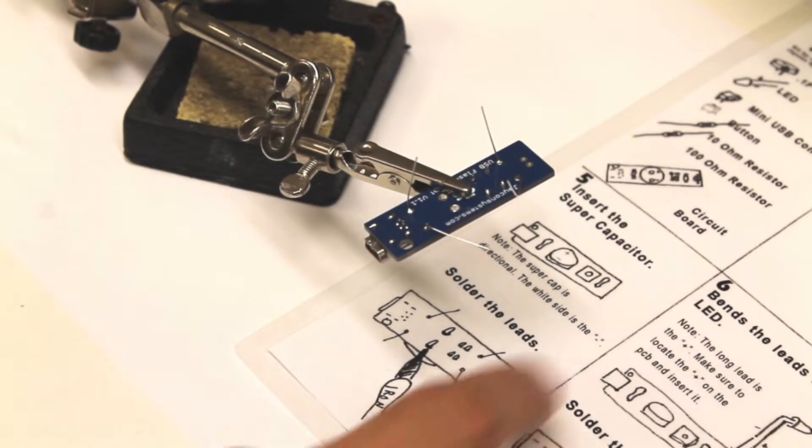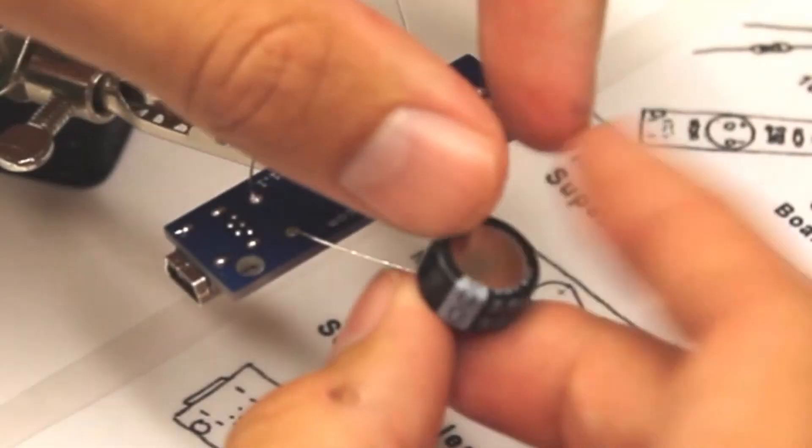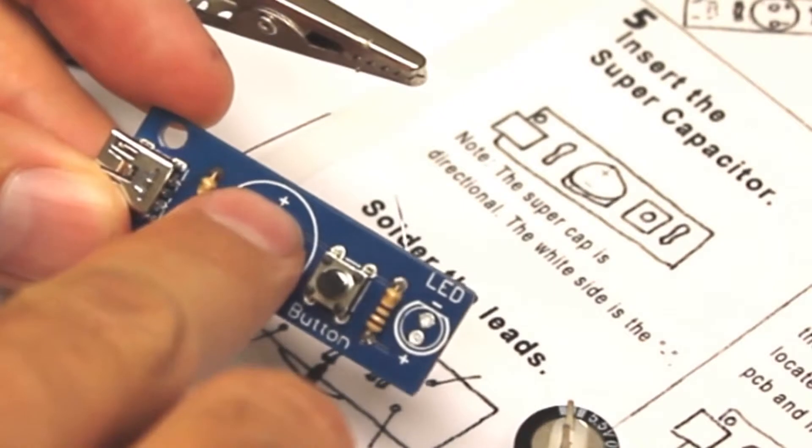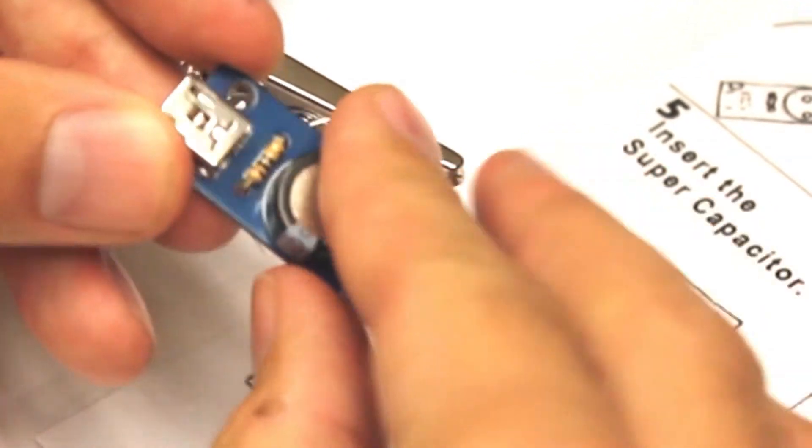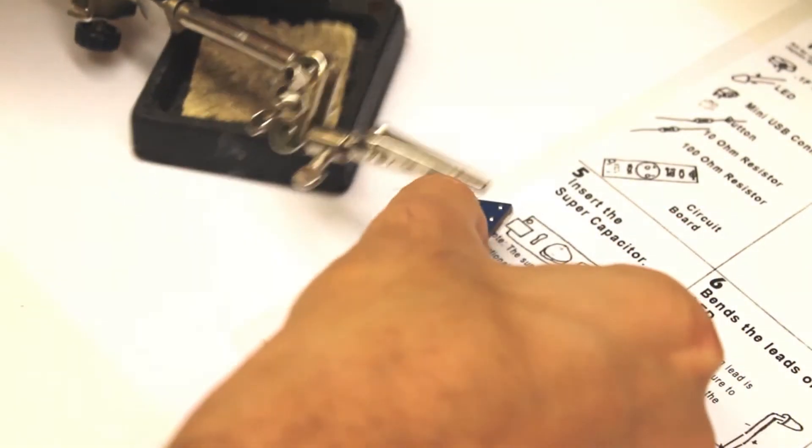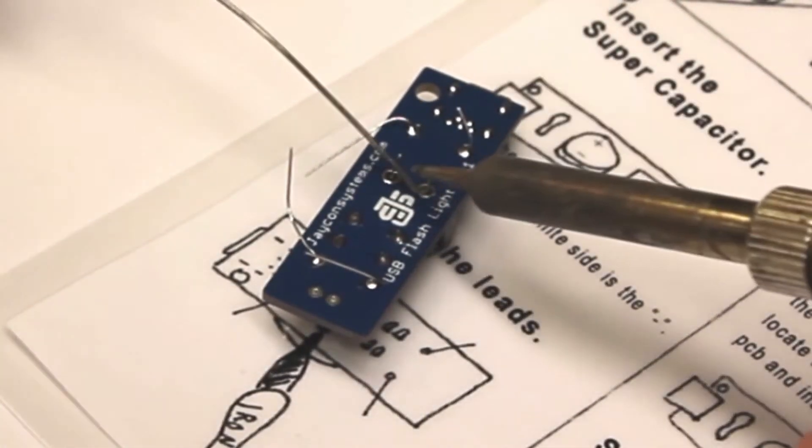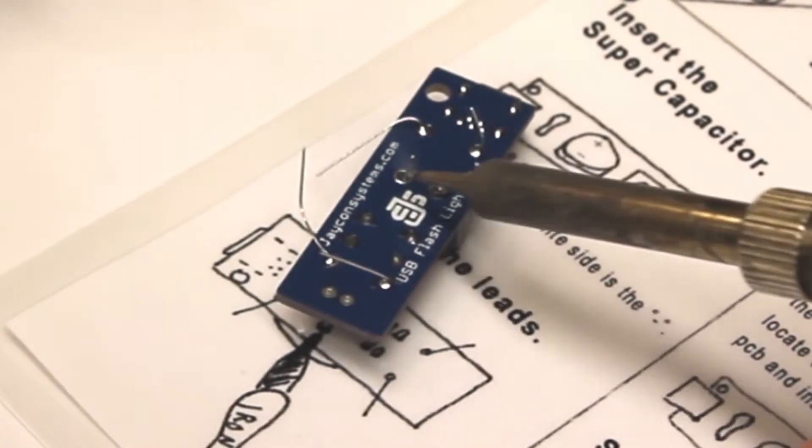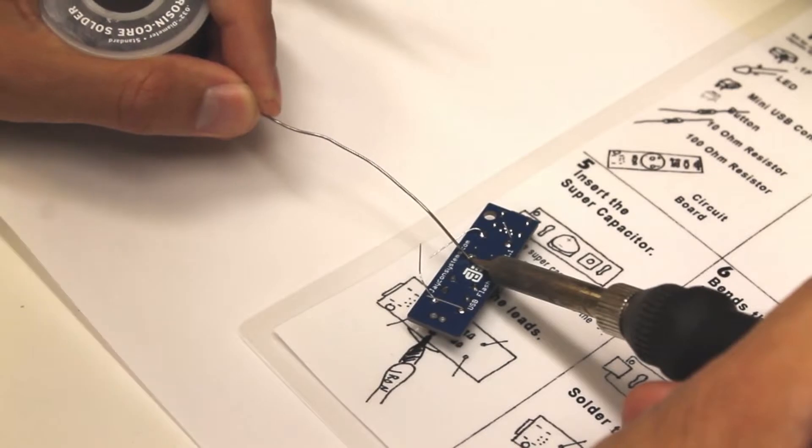Next you're going to locate the supercapacitor. Take note on the instructions, the supercapacitor is directional. That means you need to make sure that the supercapacitor is placed in the proper direction on the circuit board. Locate the plus side of the PCB and the black side of the supercapacitor. The white side of the supercapacitor is negative. Make sure to apply enough heat to the PCB and the resistor leads. You will need to make sure that enough solder gets into the hole and connects the lead to the PCB.